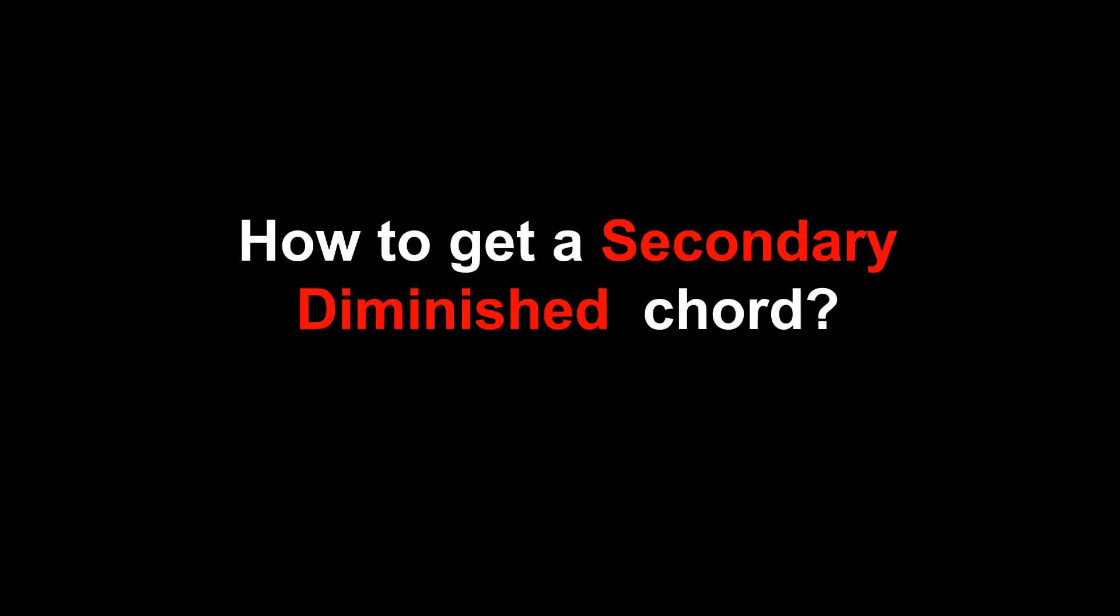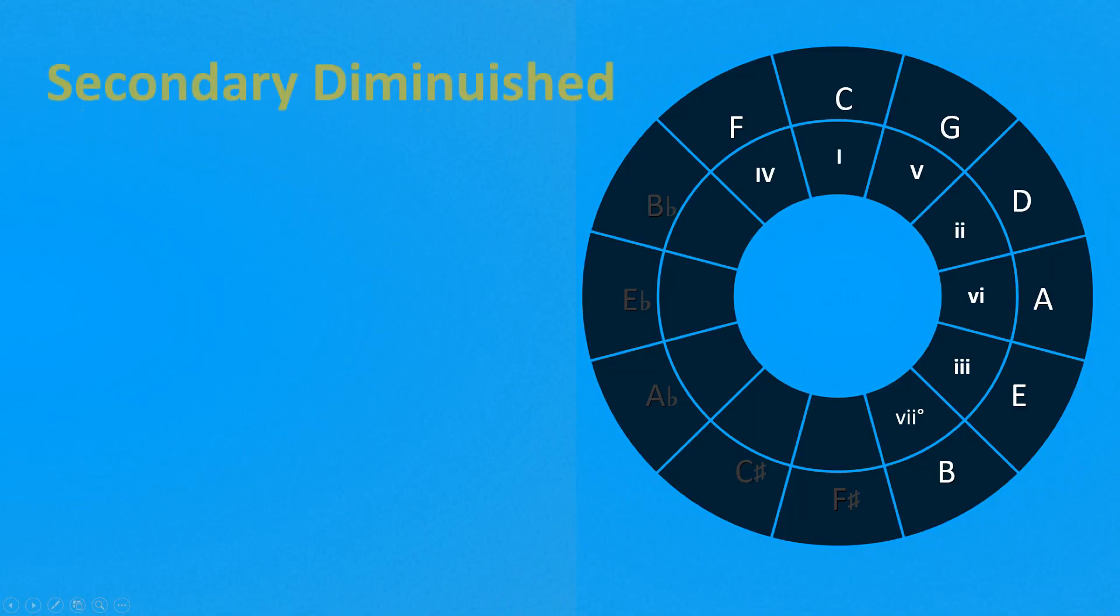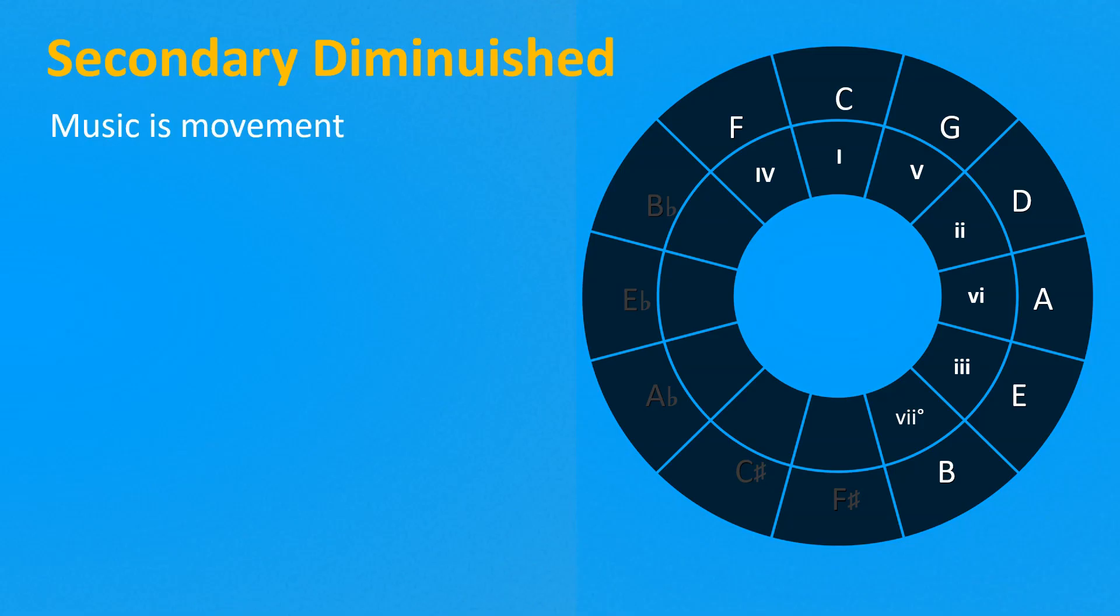How to get secondary diminished chord? From what we have seen so far, the concept of the secondary diminished chord is extremely simple. Music is movement, generated by tension and release. In the functional harmony, the classical movement is tonic, that stabilizes the key giving a sense of release, pre-dominant that starts the movement, and finally dominant that gives a great sense of tension and instability that needs to be resolved with tonic.